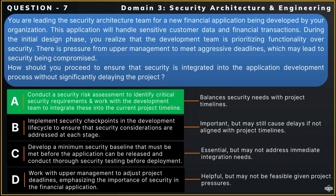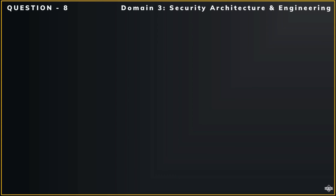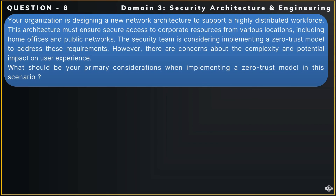Let us now move on to our next question. Your organization is designing a new network architecture to support a highly distributed workforce. This architecture must ensure secure access to corporate resources from various locations, including home offices and public networks. The security team is considering implementing a zero-trust model to address these requirements. However, there are concerns about the complexity and potential impact on user experience. What should be your primary considerations when implementing a zero-trust model in this scenario?